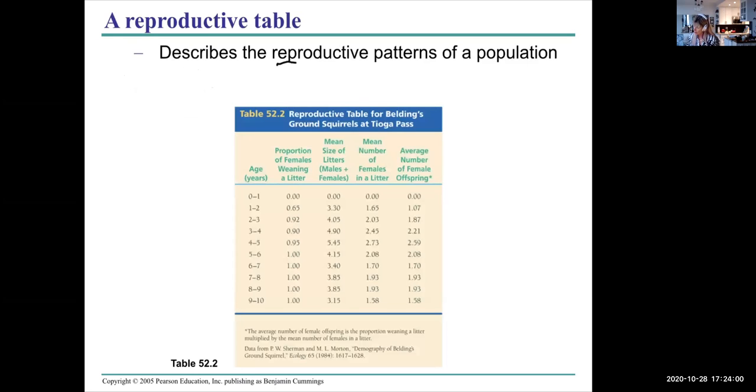A reproductive table can show the reproductive patterns of a population. This is for belting ground squirrels again. The age of females and the proportion of females that are weaning a litter. For age zero to one, none of them do. The age of maturation for belting ground squirrels is between ages one to two and two, and that's when they start to produce young. Eventually all females in the population will produce young, so it is a yearly event.